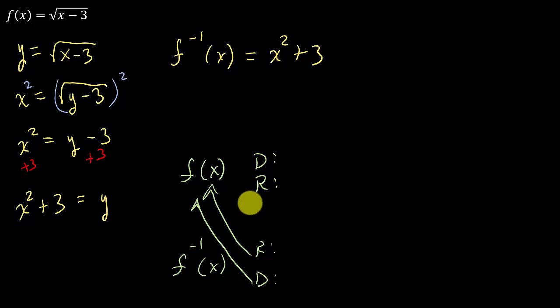So what we have to do with this is we have to restrict its domain. Remember the domain of this function is the range of this one. Well, what's the range of the original function? Remember, anytime you take the square root, it's going to always be positive or zero. So the range of this is zero to infinity because it's zero or positive.